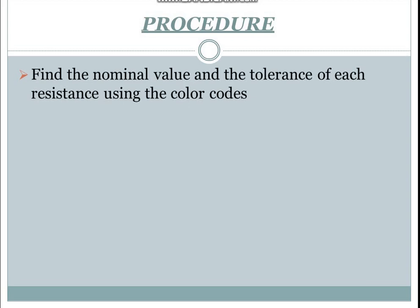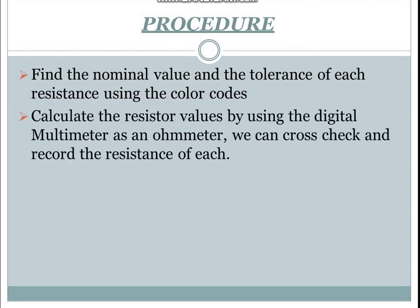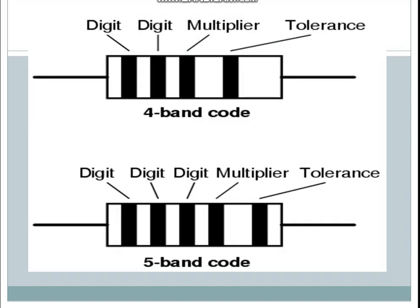The procedure is to find the nominal value and the tolerance of each resistor using color codes and a color coding chart, and to calculate the resistor value using a digital multimeter as an ohmmeter and cross-check and record the resistance of each. Here there is a four-band code and a five-band code.